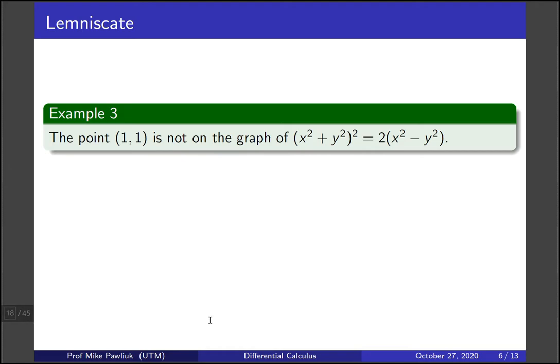Let's look at a third and final example. The point (1,1) is not on this graph. How would you show that it's not on the graph?